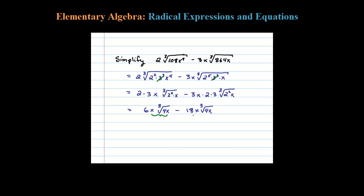Okay, so now I have like terms. Look at that, these are exactly the same variable part here. Exactly the same. So six minus eighteen is negative twelve x cubed root of four x.